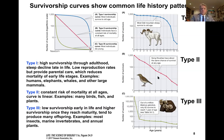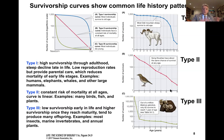The Type II survivorship curve represents species and populations at constant risk of mortality at all ages — the probability of mortality stays the same at every year of the individual's life. Whereas Type III shows low survivorship early in life and higher survivorship once individuals reach maturity. Type III survivorship curve species tend to produce many offspring, and examples include insects, marine invertebrates, and annual plants.